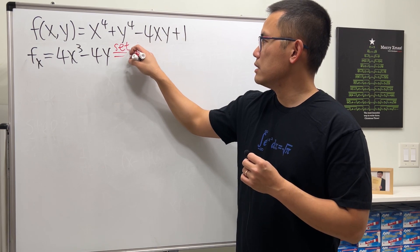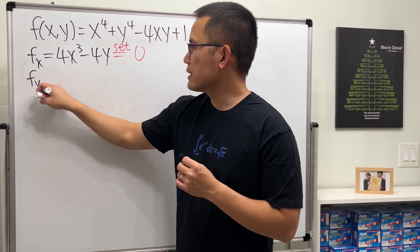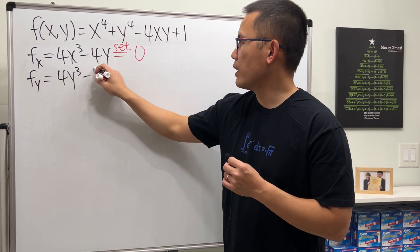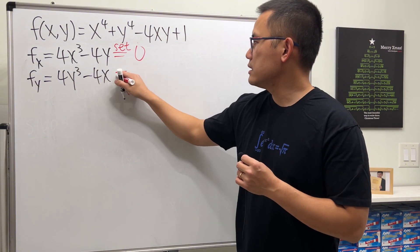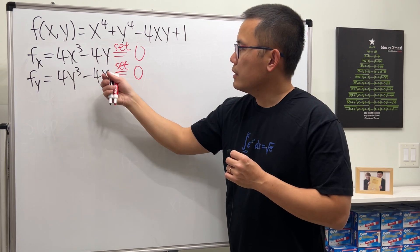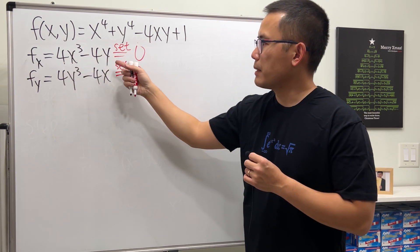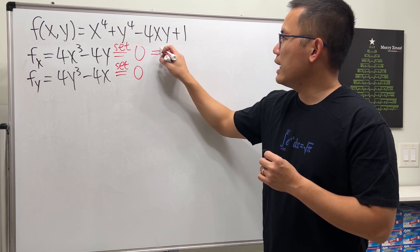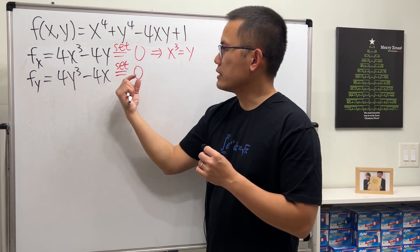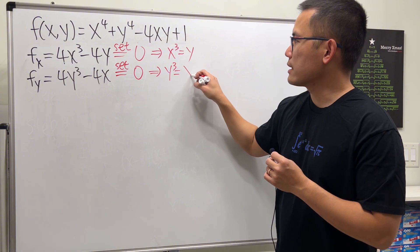We set f_x = 4x³ − 4y equal to zero. We also need f_y: that gives 4y³ minus 4x, and we set this equal to zero as well. From the first equation, bringing 4y to the other side and dividing by 4 gives x³ = y. Similarly, from the second equation, y³ = x.